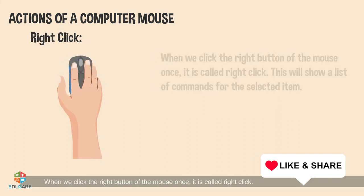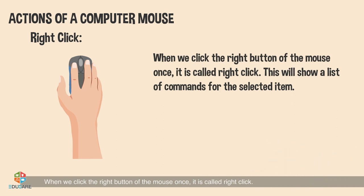Right click: When we click the right button of the mouse once, it is called the right click. This will show a list of commands for the selected item.